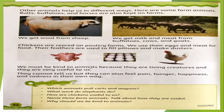We must be kind to animals because they are living creatures and they are very useful to us. They cannot tell us, but they can also feel pain, hunger, happiness, and sadness in their own way. That's why we must be very kind to animals — they cannot speak, they cannot talk to us, but they feel. Lesson 18, page 52, is also done.